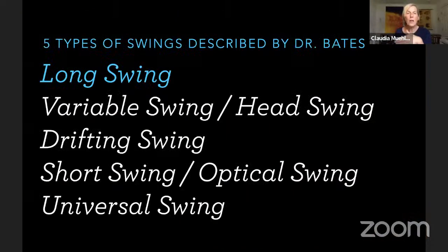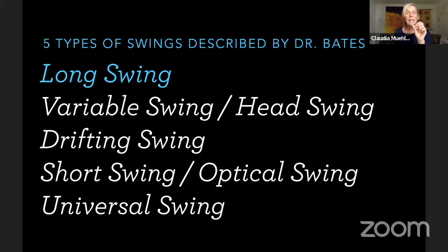I want to talk about five different types of swings. These were described by Dr. William Bates, who wrote the groundbreaking book 'Perfect Sight Without Glasses' in 1920. He also published Better Eyesight magazines from 1919 to 1931. He called things different things over time, but the main one — that big swing I was just demonstrating — was the long swing.